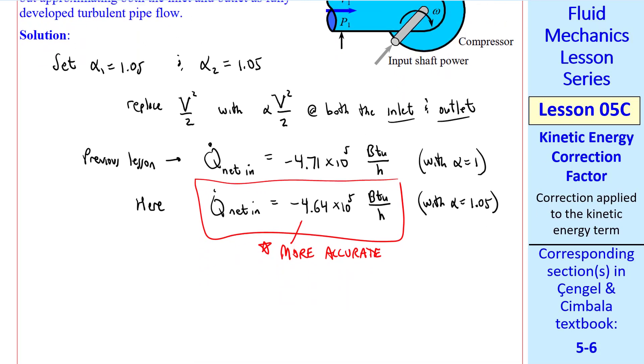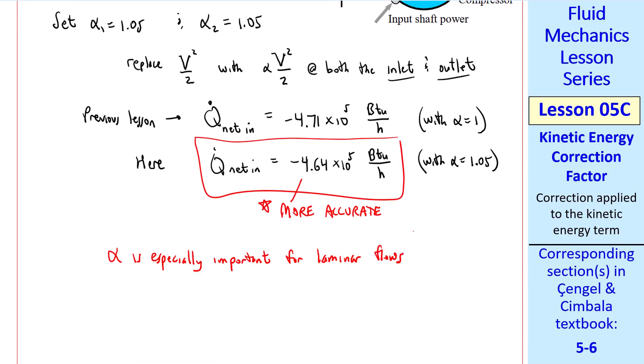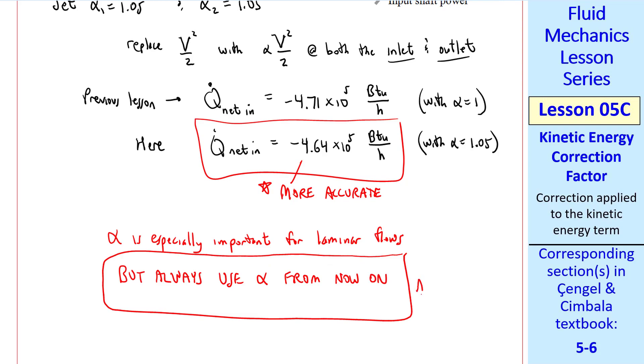The difference here is fairly small, only about 1.5%, but we do get a more accurate answer. As I've already said, α is especially important for laminar flows, but always use α from now on, whether the flow is laminar or turbulent.